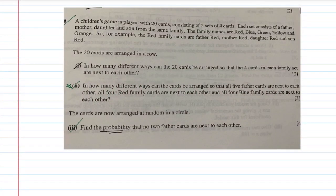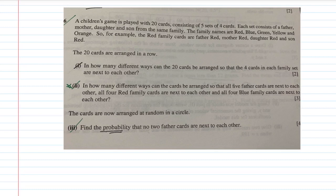Hey guys, welcome back to A-level Lessons Online. We're going to be looking at question six in this next video on P&C — permutations and combinations. It's a chapter that a lot of us struggle with. It's not an easy topic to master, but once you do enough questions you'll slowly get it. The method of doing it is usually roughly the same. Grab yourself a pen, a notebook, sit back and enjoy.